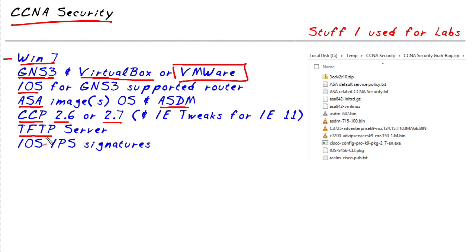TFTP software is really convenient if we need to move files back and forth — for example, between our local hard drive and the flash drive on our virtual ASA. We'd also want the iOS IPS signatures that are part of iOS-based IPS, as well as the public key file from Cisco that allows us to validate the signature package before we reinstall it as part of an iOS-based IPS solution.